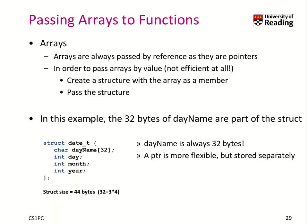What happens if we want to pass an array to a function? An array is always passed by reference, as we learned with pointers. If you want to pass arrays by value — which is not efficient — you will have to create a structure with the array as a member and pass it inside the structure.